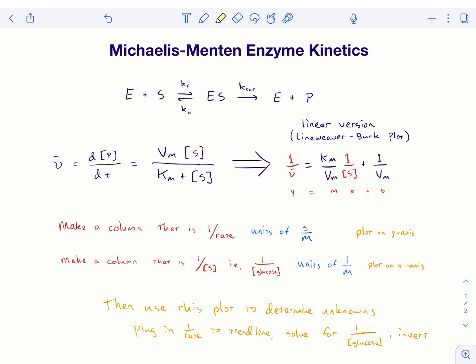So, what we're going to do is we're going to use the linear version of this called the Lineweaver-Burk plot, where it's a double reciprocal plot. So, on the y-axis, we have the inverse of our reaction rate that we just calculated a little earlier in the video. So, you'll make a column in Excel that is one over this rate you just calculated. That goes on your y-axis of your plot.